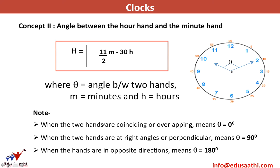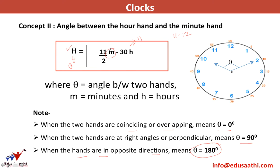When the two hands are coinciding or overlapping, θ = 0. You can set θ = 0, put h = 11 (if the question asks between 11 and 12), and solve for m to find when the hands coincide. When the two hands are at right angles, θ = 90 degrees; when in opposite directions, θ = 180 degrees. With this formula you have three variables — θ, m, and h — so any two given allows you to find the third. Keep in mind the absolute sign.